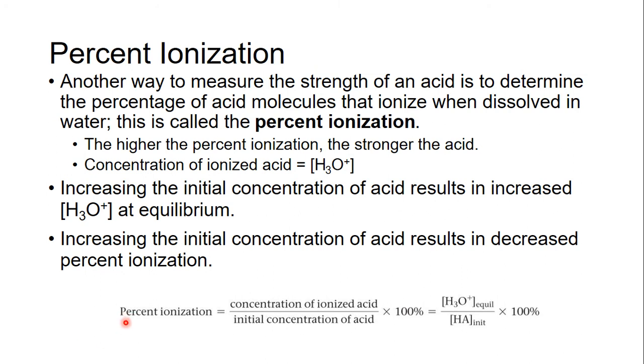And the calculation equation for this is your concentration of acid that released a hydrogen, your ionized acid, divided by your initial concentration of acid times 100%. Or, it's the amount of H3O+ in solution at equilibrium, divided by the amount of weak acid you started with times 100.